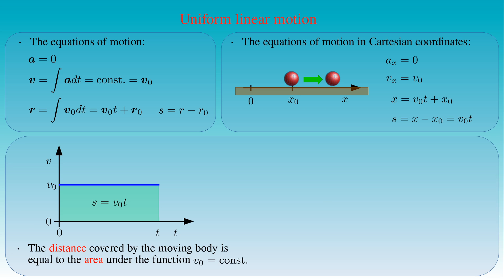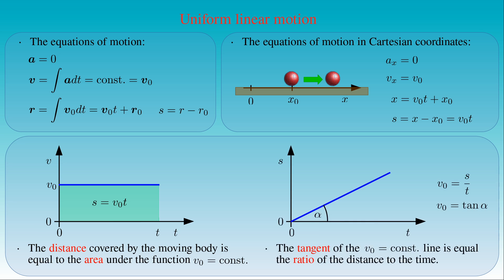We can also plot the distance s as a function of time t. Since s equals v0 times t, we have a straight line from the origin with slope v0 — that is, the angle alpha between the x-axis and the line corresponds to the speed v0, which is the ratio of distance to time. Given time t on the abscissa, we can read off the value of distance s from the ordinate using this line.